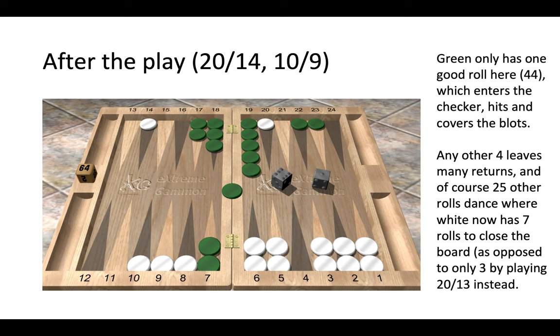Really here, green only has one good roll, which is actually a joker of double four—one roll in 36 that would play well. If he were to roll a double four, he could enter from the bar, cover his two blots, and hit us as well. That would be a tremendous swing. However, what if green doesn't roll a double four? 35 times out of 36, green won't roll that.